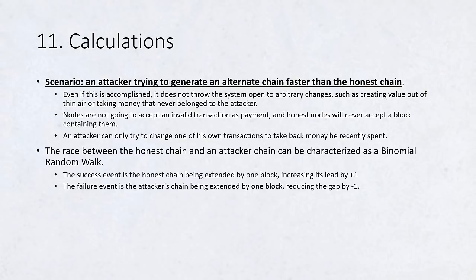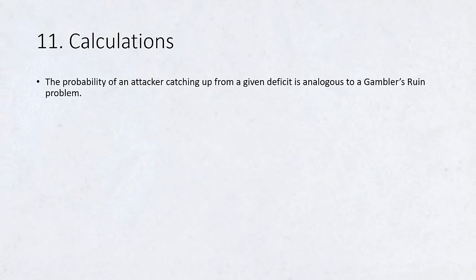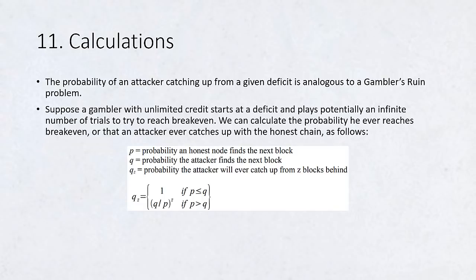The race between the honest chain and an attacker chain can be characterised as a binomial random walk. The success event is the honest chain being extended by one block, increasing its lead by plus one, and the failure event is the attacker's chain being extended by one block, reducing the gap by minus one. The probability of an attacker catching up from a given deficit is analogous to a gambler's ruin problem. Suppose a gambler with unlimited credit starts at a deficit and plays potentially an infinite number of trials to try to reach breakeven. We can calculate the probability he ever reaches breakeven, or that an attacker ever catches up with the honest chain.